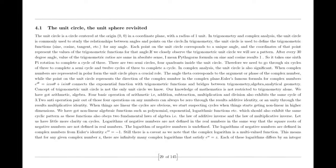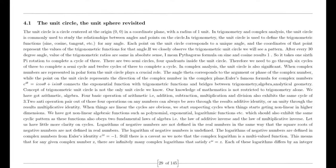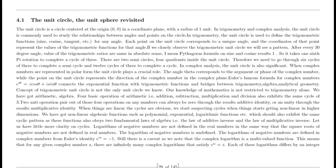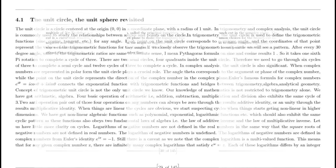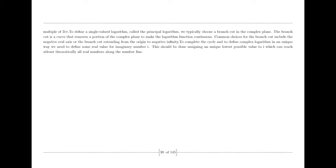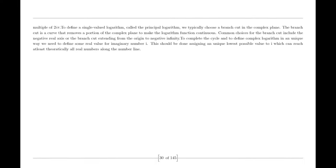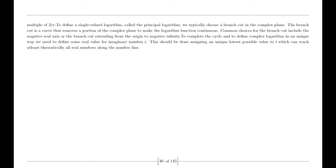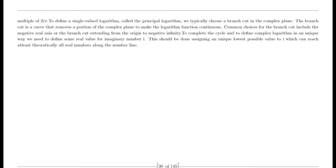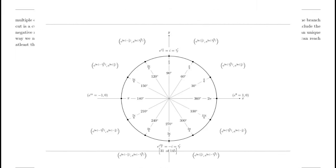By viewing complex numbers as an extended decimal system with unique place values and logarithmic replacements, we preserve consistency and open the door to unifying more complex number systems. This vision holds the promise of a more cohesive and comprehensive mathematical framework, enhancing our understanding and application of numbers in diverse fields. As we stand on the brink of unprecedented technological advancements, the integration of complex numbers with the decimal number system opens up a myriad of possibilities, significantly impacting quantum computing and artificial intelligence.